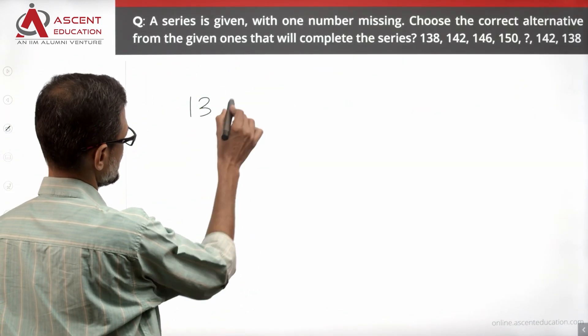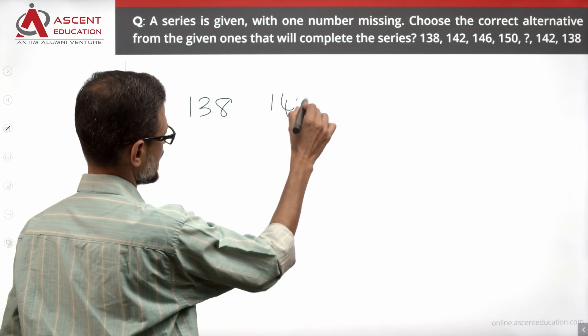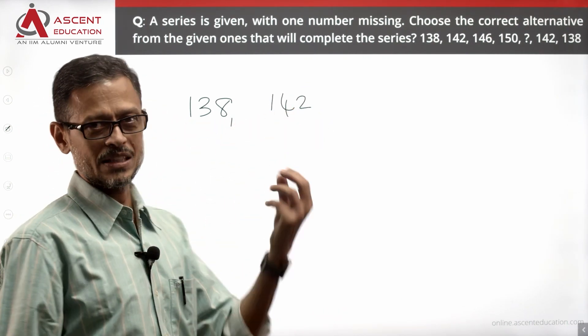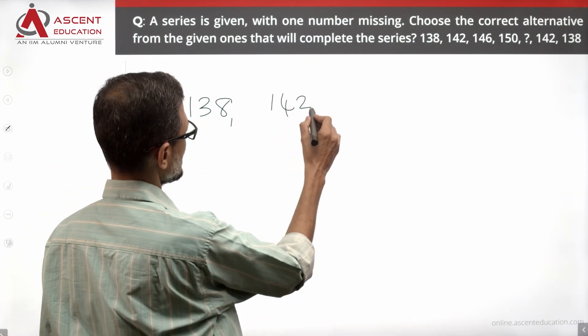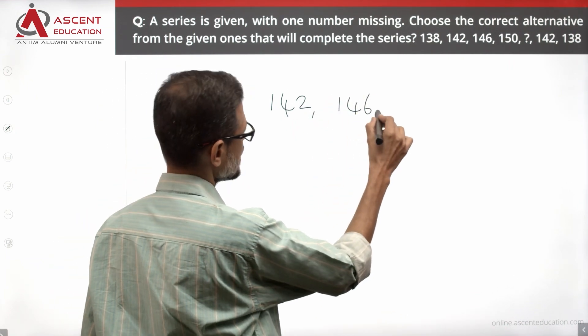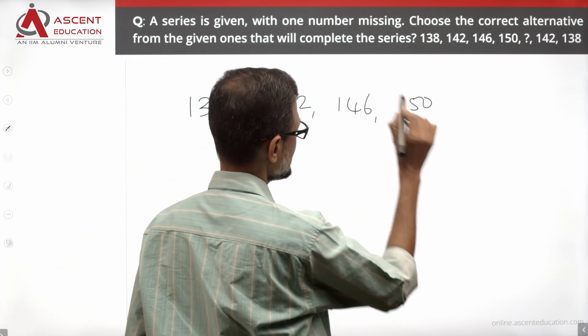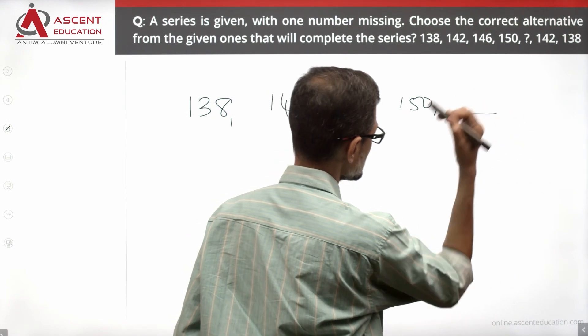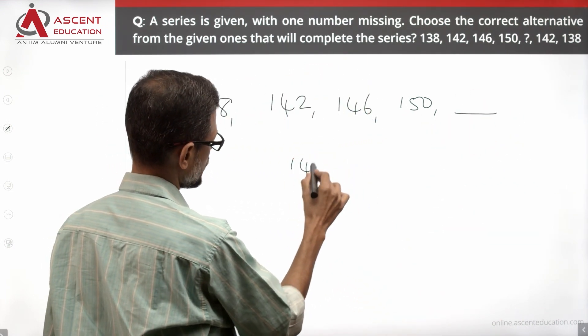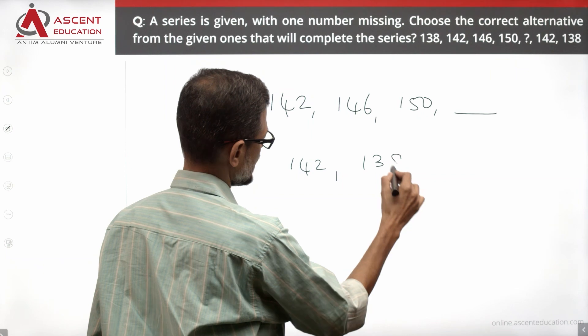The series starts with 138, then 142, then 146, then 150. This number is missing. Then we have 142, and then 138.